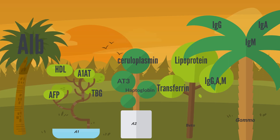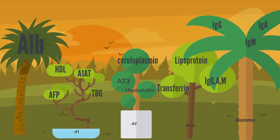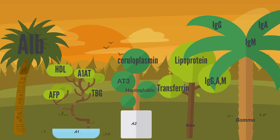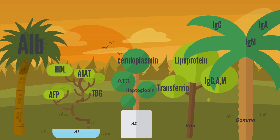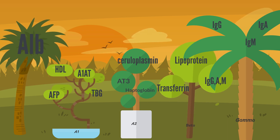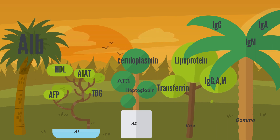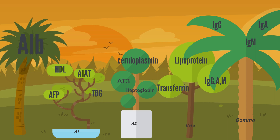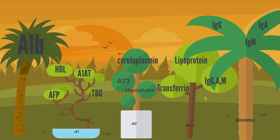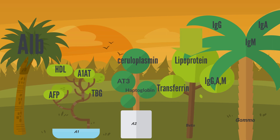Is there a gamma globulinopathy? In our previous video, we talked about how the proteins in the body are like a harmonious ecosystem. The different proteins in the body are like the shrubs and trees of the forest. Each tree has different branches. In our periprotein forest, there are five main types of plants: albumin, the alpha-1 tree, the alpha-2 tree, the beta tree, and the gamma tree.